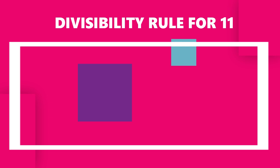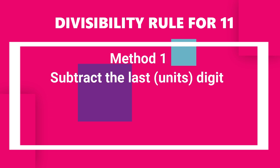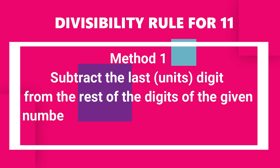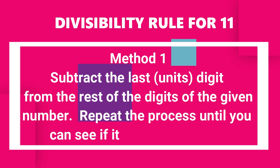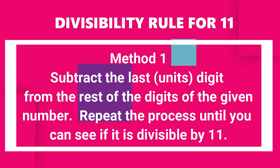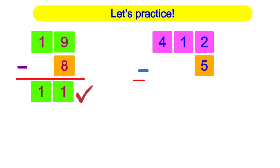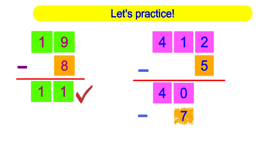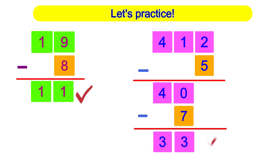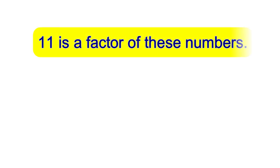Last but not least is the divisibility rule for 11. There are many ways to find out if a number is divisible by 11. Today, we will learn two of them. Method 1: Subtract the last digit from the rest of the digits of the given number. Repeat the process until you can see if it is divisible by 11. Let's see an example. Here's another example. Therefore, 11 is a factor of these numbers.